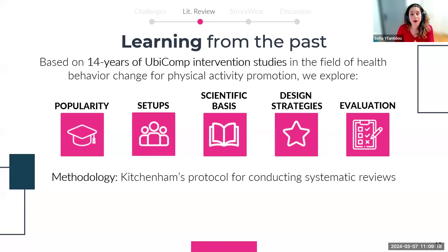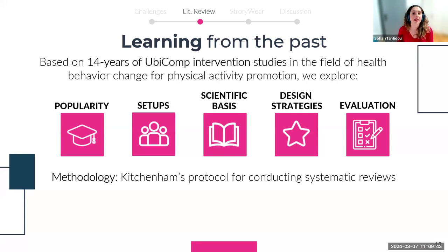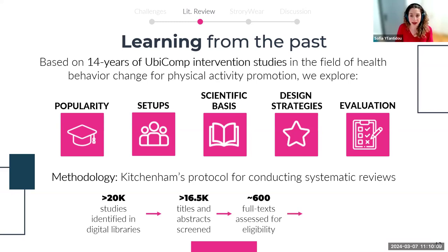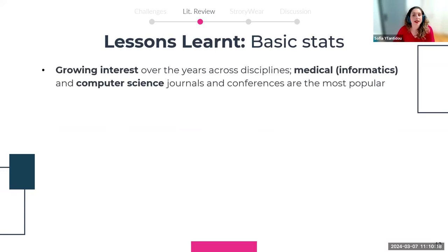To answer this question, we first looked at existing literature as a baseline to learn what works and what doesn't in terms of user interaction. We studied 14 years of ubicomp intervention studies for health behavior change — specifically physical activity promotion — to explore how popular such studies are, what experimental setups have been used, the scientific basis behind their designs, which design strategies proved most effective, and how evaluation was performed. Following Kitchenham's protocol for systematic reviews, we started with more than 20,000 studies, scanned 16,500 titles and abstracts, and assessed 600 full texts for eligibility.